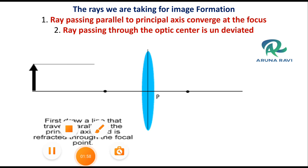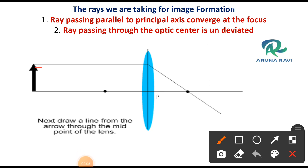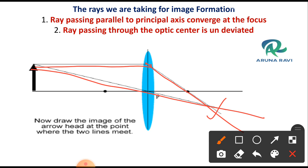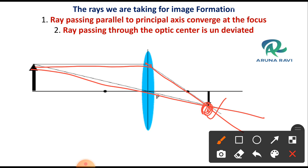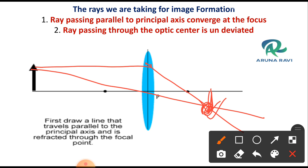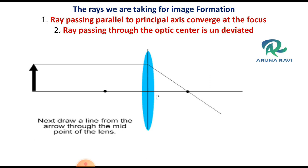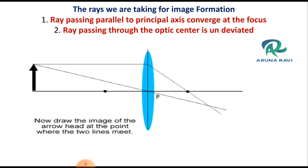First, we will choose the principal axis. We will draw two lines. We will draw the second line and mark the intersection point. I will draw a normal. This normal will represent the size of the image. The two rays we draw are very important. The first one is the ray passing parallel to the principal axis, which converges at the focus. The second is the ray passing through the optic center, which is undeviated.